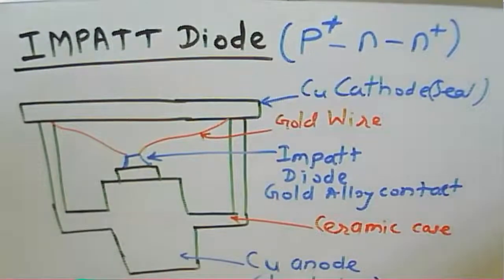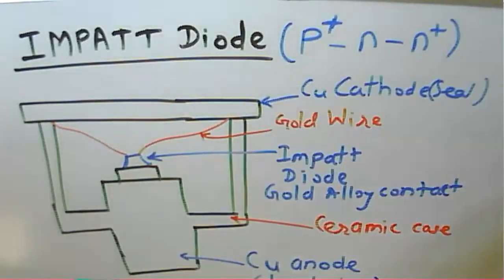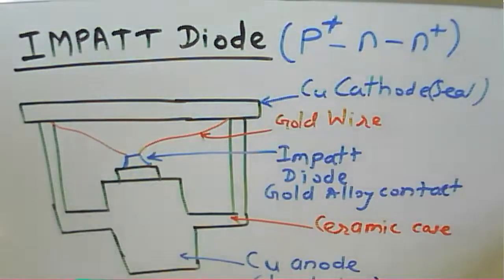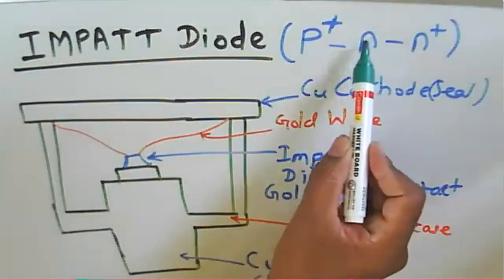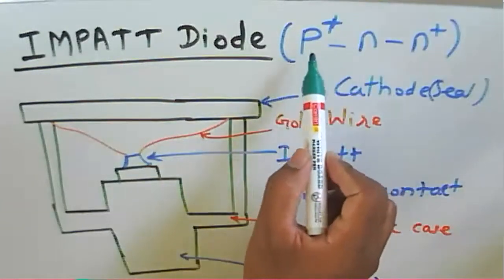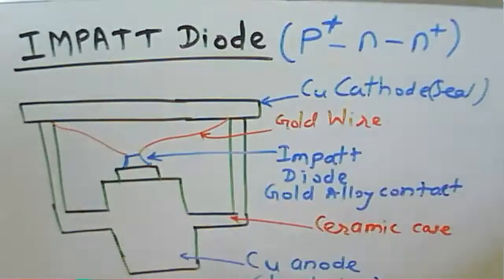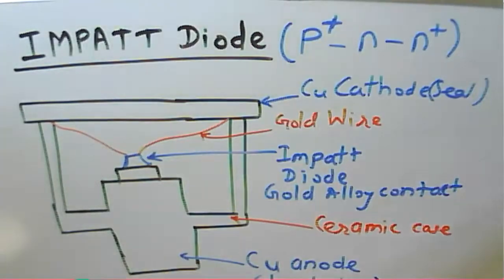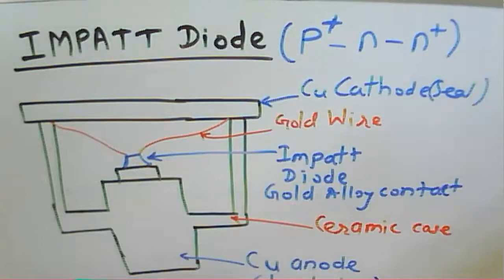The '+' notation means a highly doped material. If you see how the IMPATT diode is going to be constructed or fabricated: we have an n-type semiconductor, and on the left side there will be p+ and on the right side there will be n+. This is how the diode is fabricated.